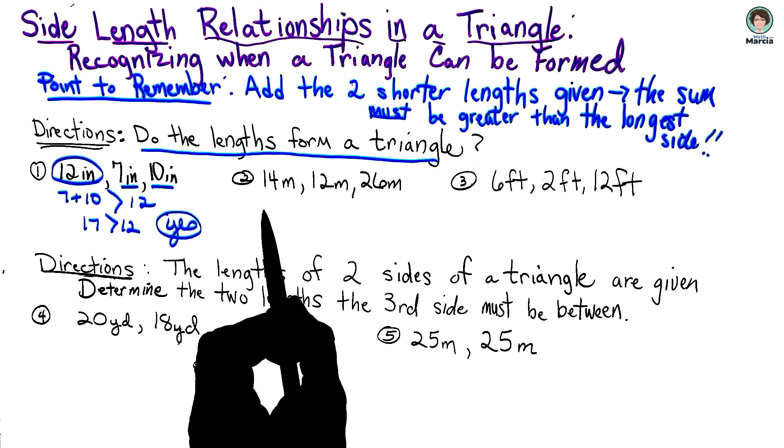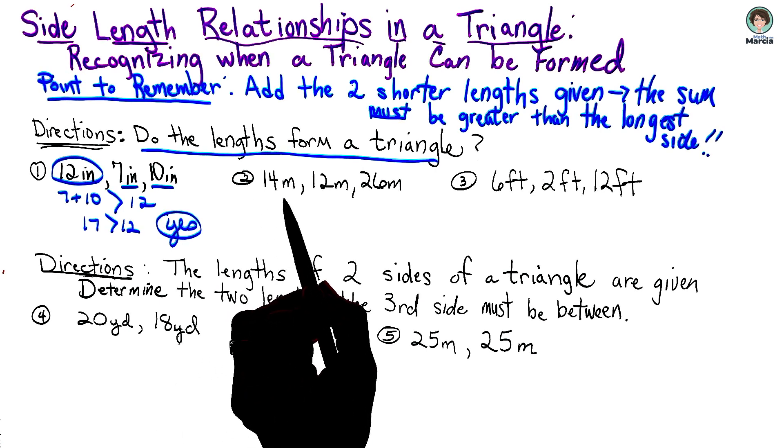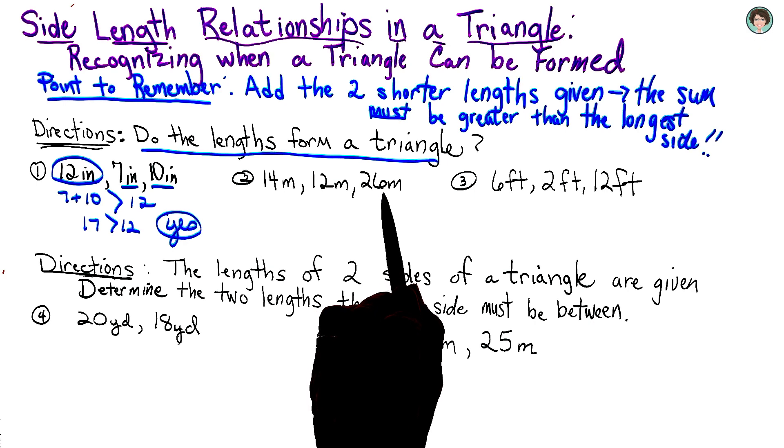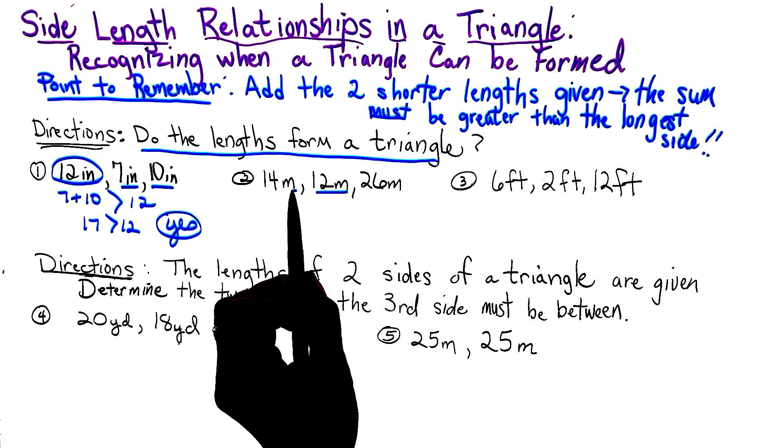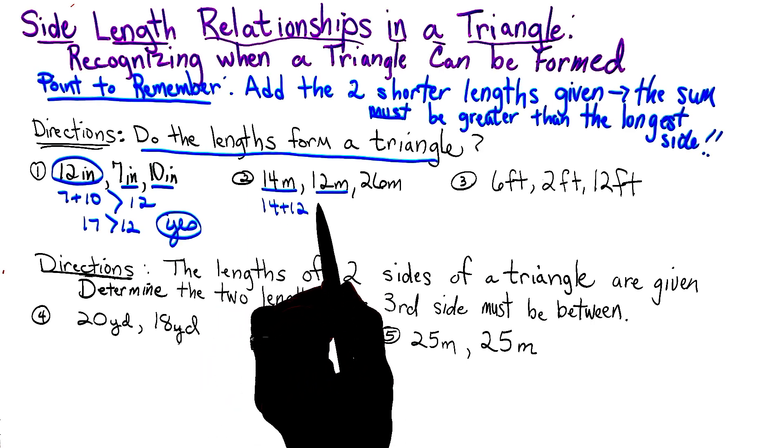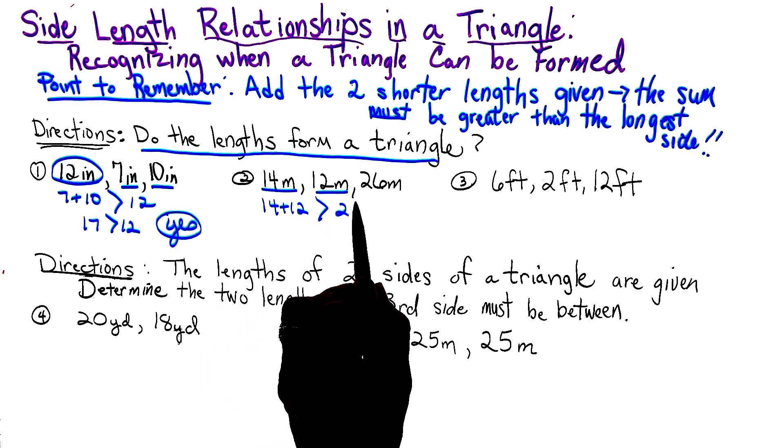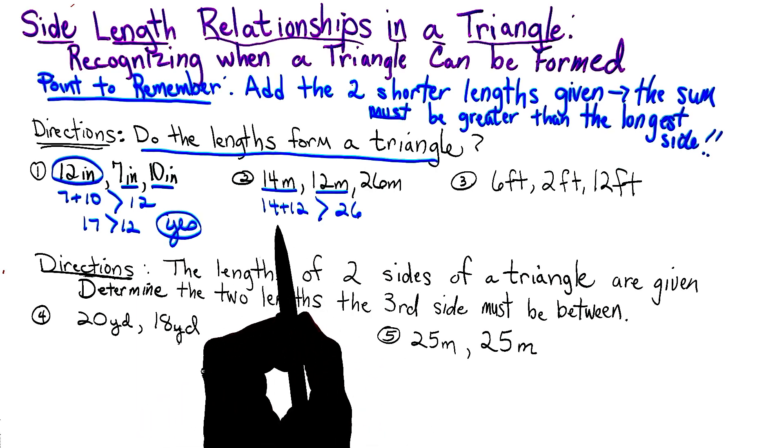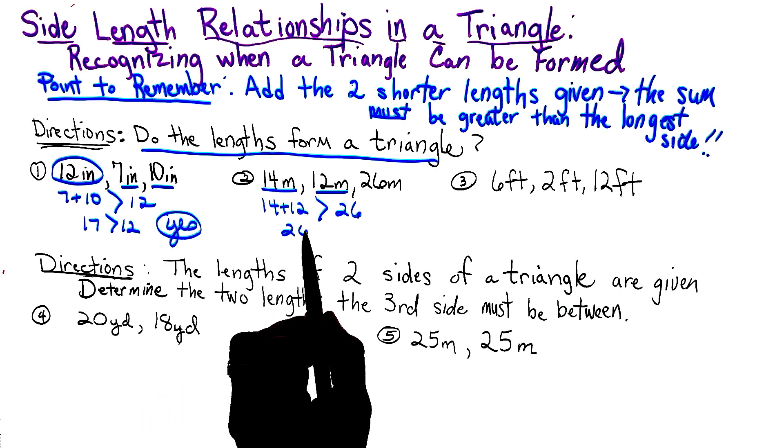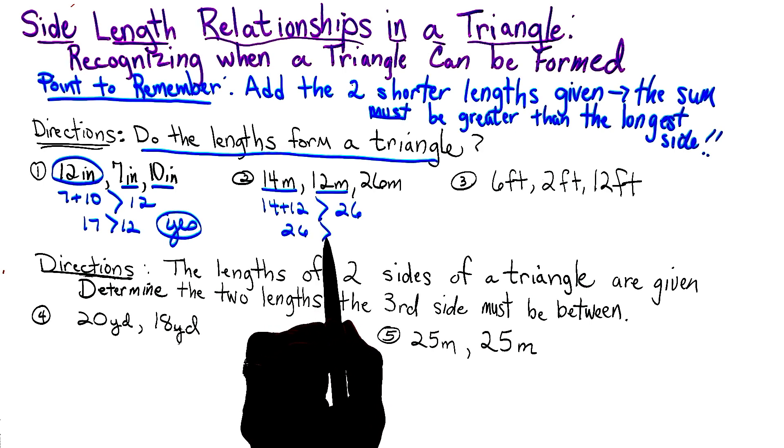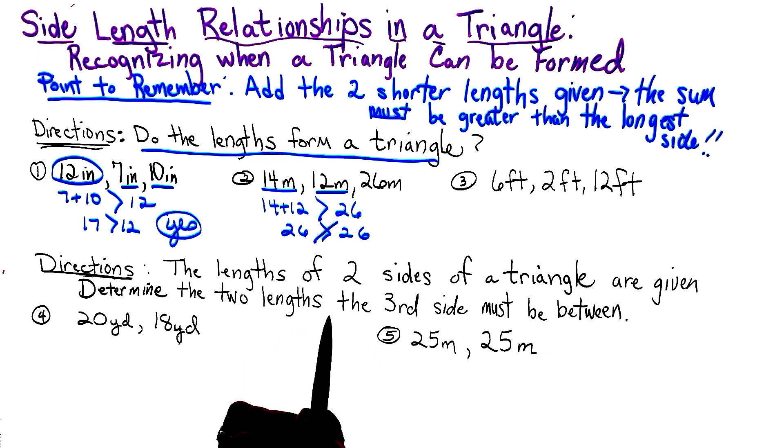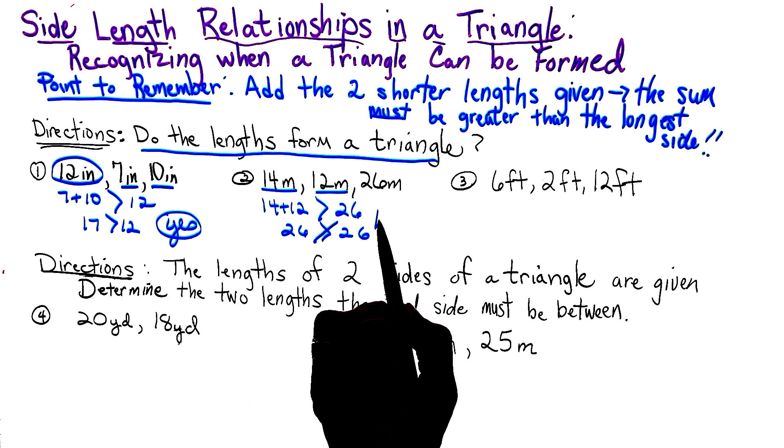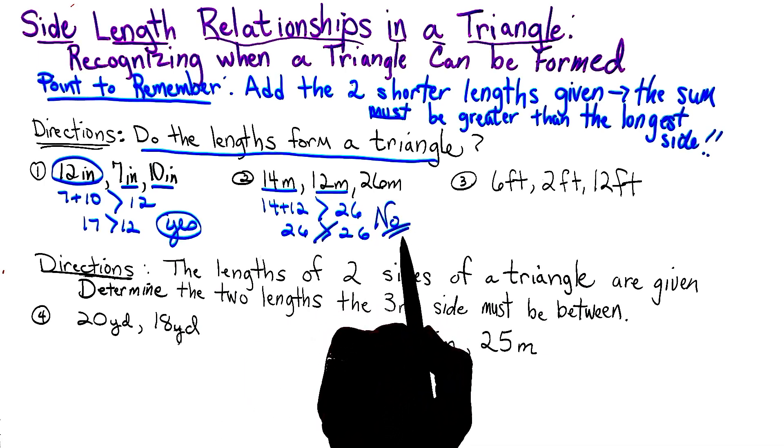Let's look at number two. We have 14 meters, 12 meters, and 26 meters. So these are my two smaller numbers, so I'm going to add them together. And they must be greater than 26 in order to form a triangle. And we actually get a 26, and I'm putting that greater than symbol. Is this true? And that is not. It's equal to. So this would not form a triangle.